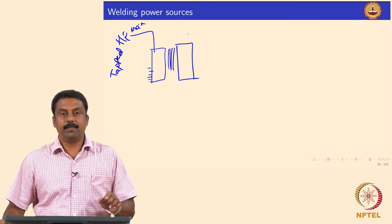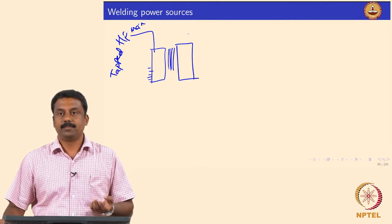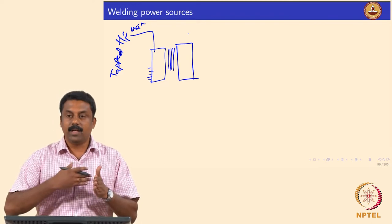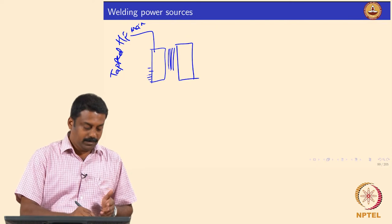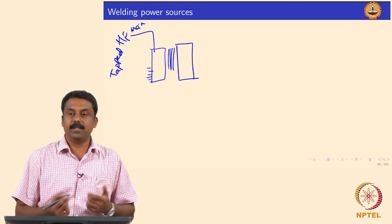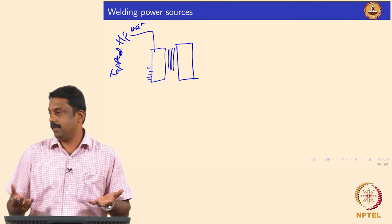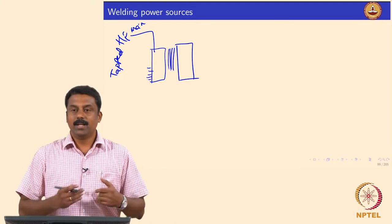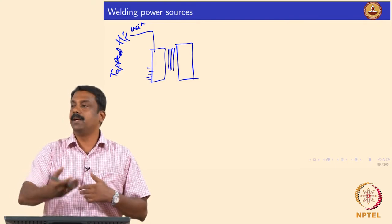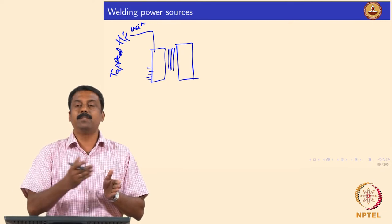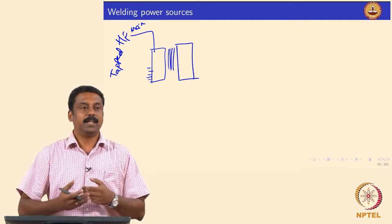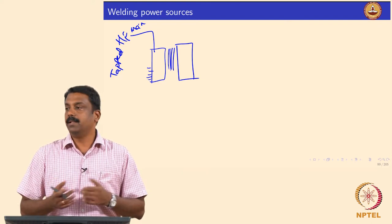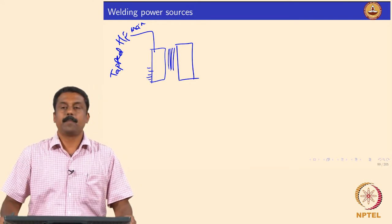The difficulty with this type of conventional transformer is regulation of the output. In a tap transformer, we cannot regulate the output gradually. Each switch has its own defined power rating — for example, 100 amperes and 10 volts — and the next switch will have its own defined rating. You cannot have values in between, so gradual changing of the output is not possible with simple tapped transformer systems.